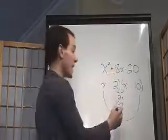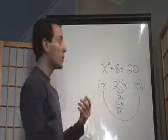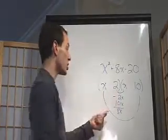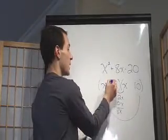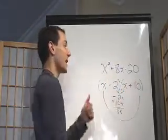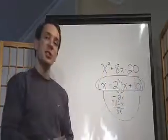If we want that to be 8x, what would your signs have to be there? Hopefully you can see it would need to be a negative 2 and a positive 10 to give us positive 8. So I'm going to put those signs up here. Negative goes first, positive goes second. And so there's your answer, guys, x minus 2 and x plus 10.